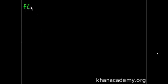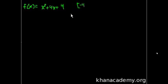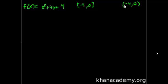They say f of x is equal to x squared plus 4x plus 4, and the interval they care about is from minus 4 — including minus 4, that's why we have the brackets — to 0. Just so you know, this interval notation: if it was written with parentheses, it would mean all the numbers between minus 4 and 0 but not including them. This means it is a closed interval, so you're including minus 4 and including 0.